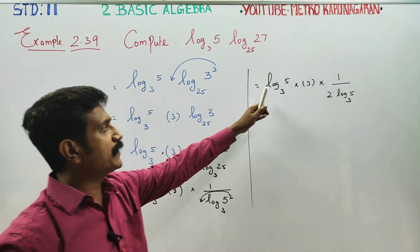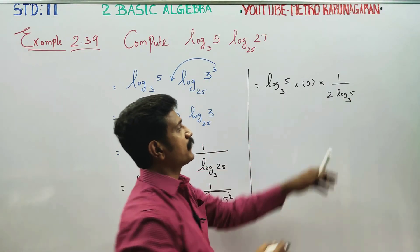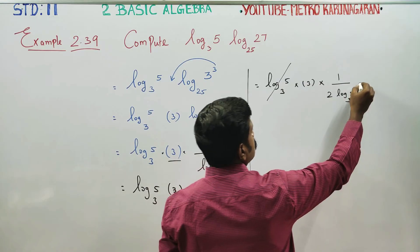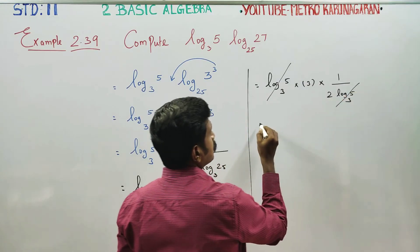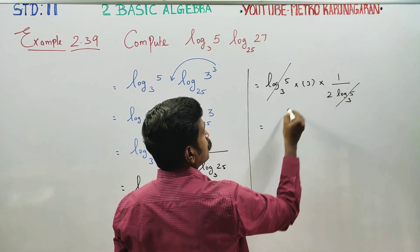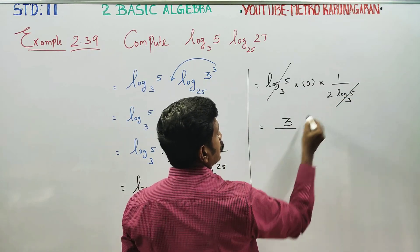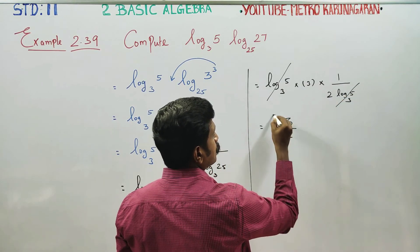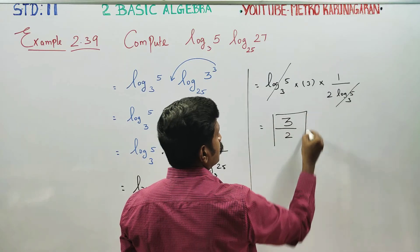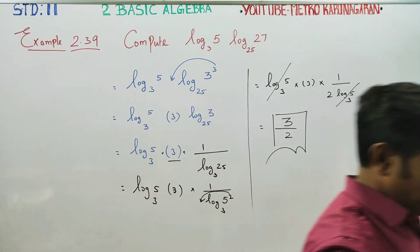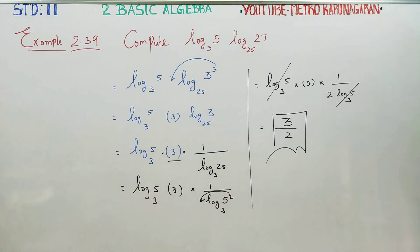Log 5 to the base 3, log 5 to the base 3 — these two are the same, so we cancel them. The numerator is 3, the denominator is 2. The final answer will be 3 by 2. Thank you.